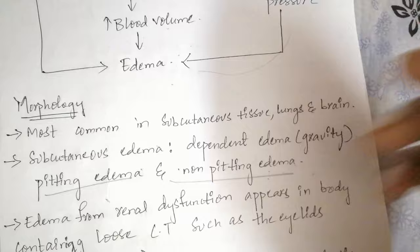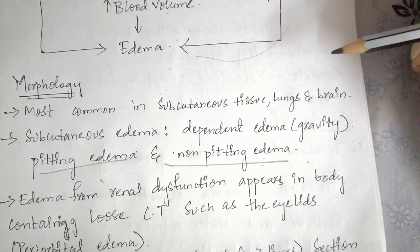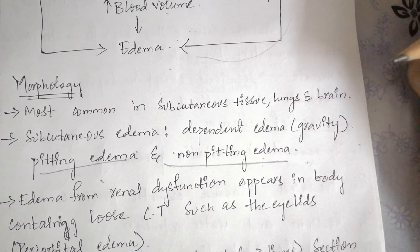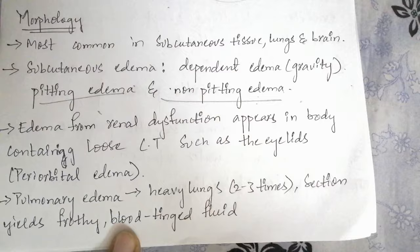Edema from renal dysfunction often appears initially in parts of the body containing loose connective tissue. For example, in the eyelids, it is called periorbital edema.